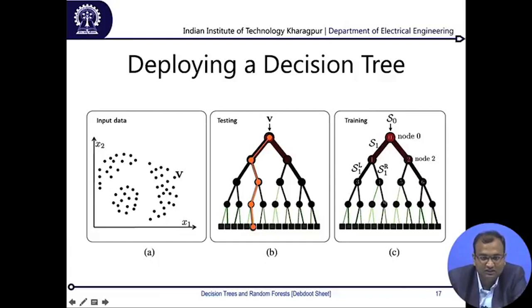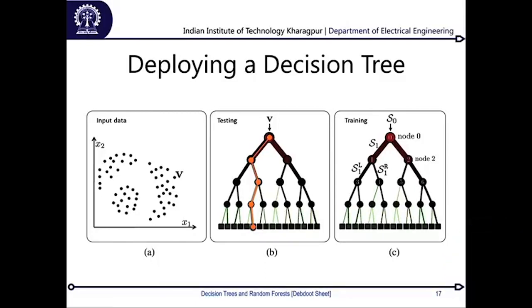Eventually in subsequent lectures, when we cover random forests, we will also cover a simple code snippet showing how to train this whole module. With that I conclude on decision trees and we wait for the next one on random forests. Thank you.